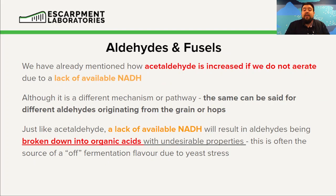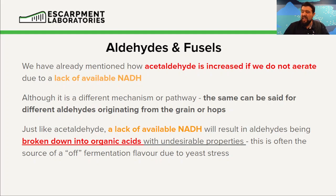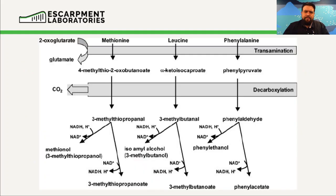Finally, we have aldehydes and fusel alcohols. We've already mentioned how acetaldehyde is increased if we don't aerate our wort due to a lack of NADH. Although it's a different mechanism and pathway, the same can be said for different aldehydes as well. All aldehydes require NADH or some sort of energy to be broken down. Where do these other aldehydes come from? Those grassy, grainy, worty characteristics that you see — those are aldehydes and they originate from the grains and hops. Just like acetaldehyde, a lack of NADH will result in these not being broken down, or worse, they'll be broken down into organic acids that have undesirable flavor properties — things like oniony or garlicky, often the source of an off-fermentation flavor due to yeast stress.